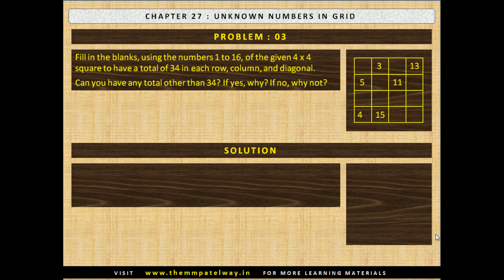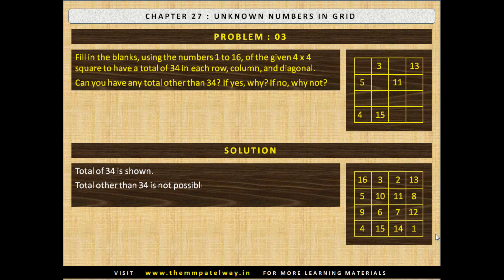Now stop the video and solve the problem. A total of 34 is shown. A total other than 34 is not possible. Reason: if we add 1 through 16 and divide it by 4, we get 34, and therefore we cannot have any other answer.